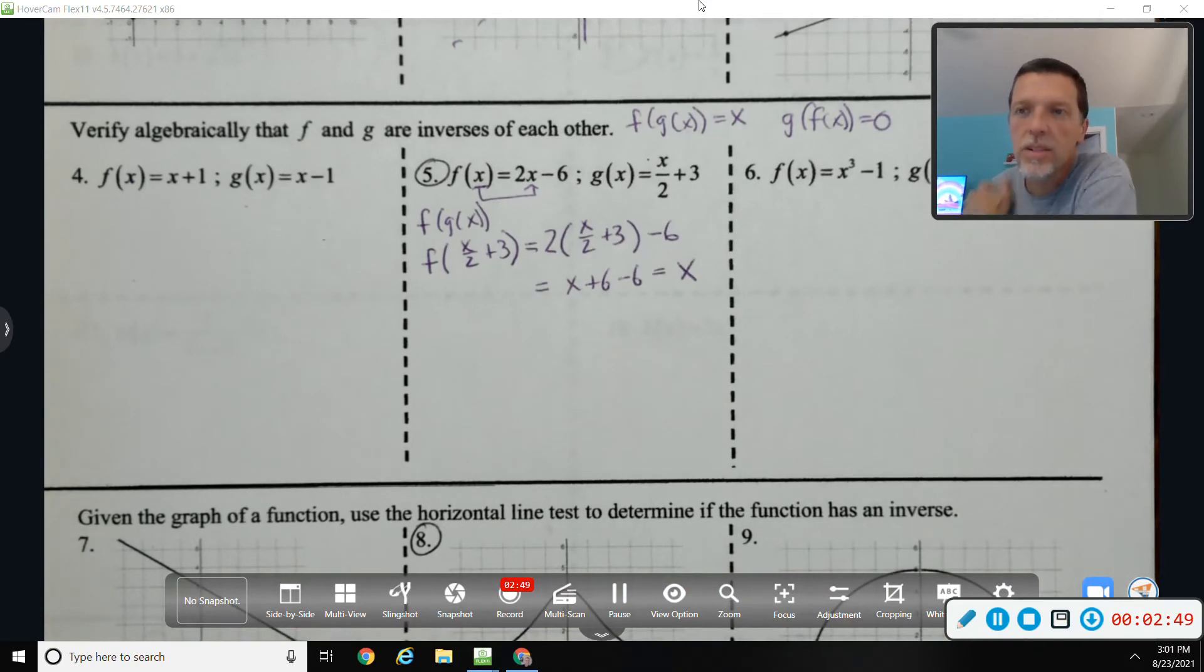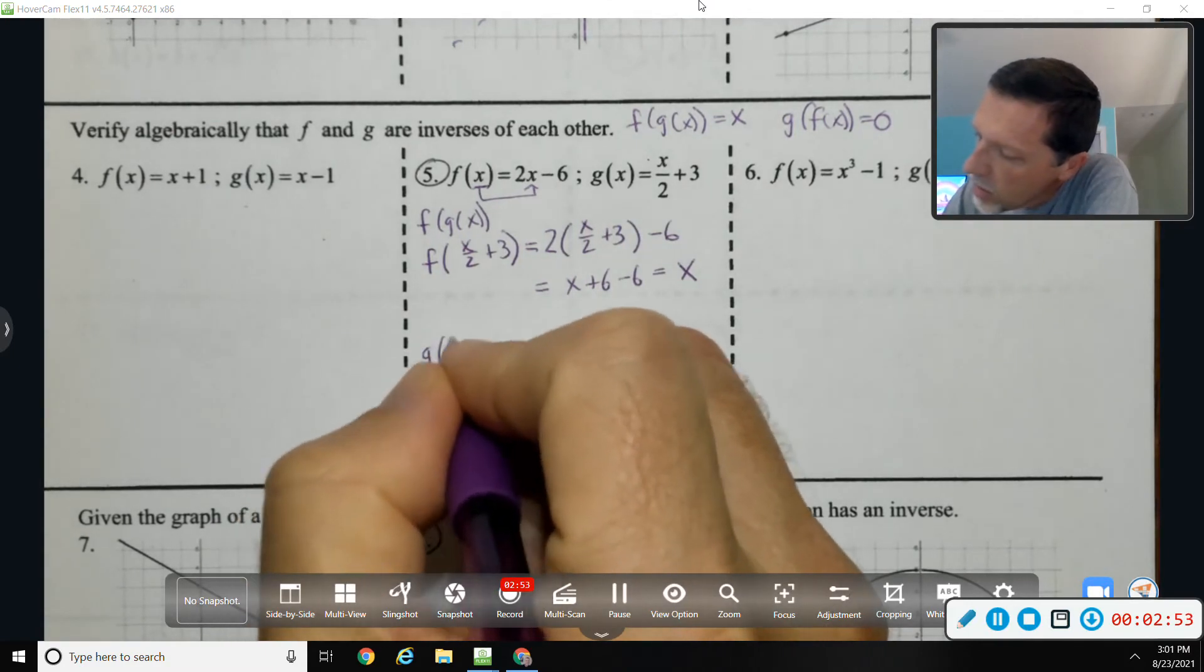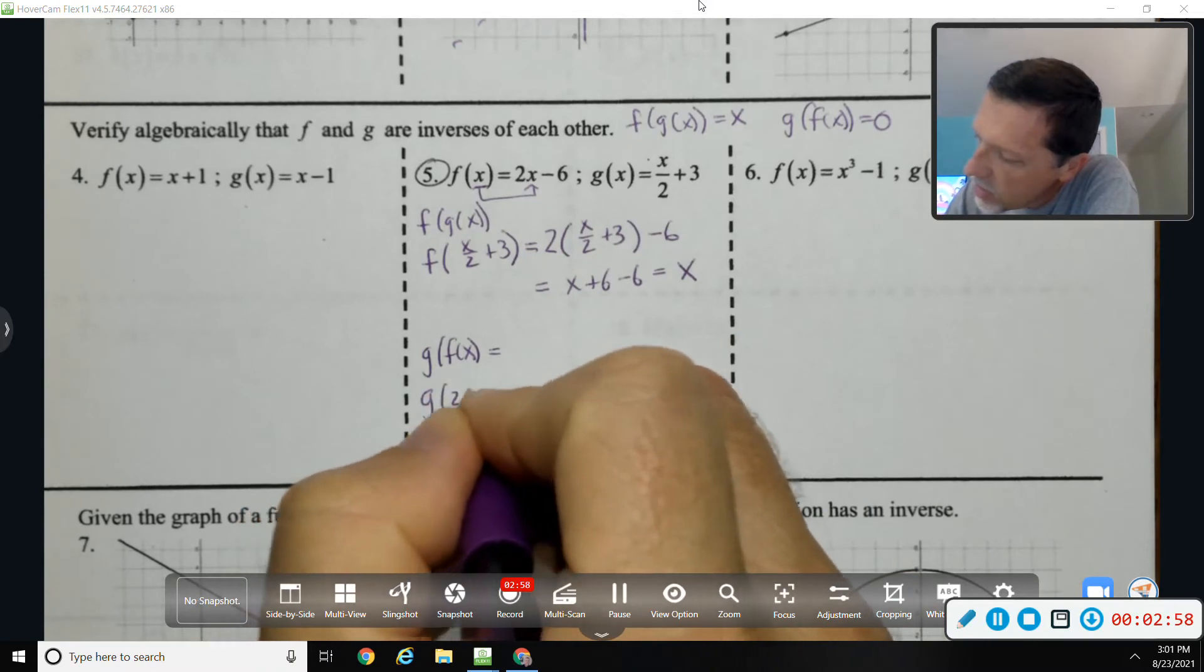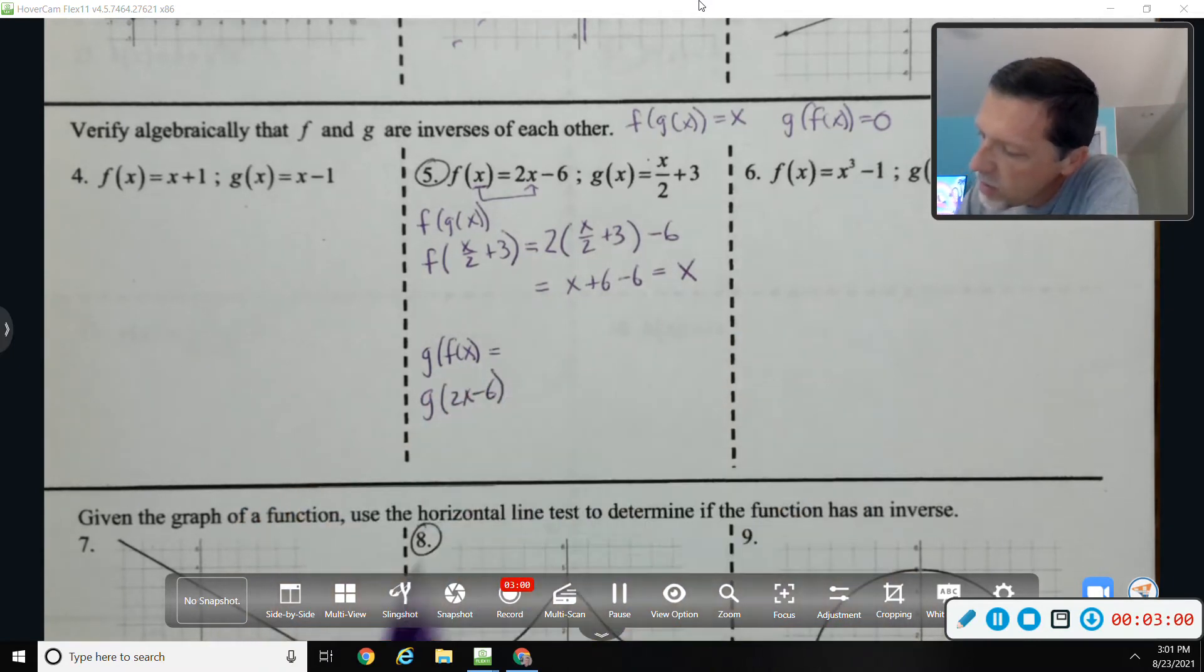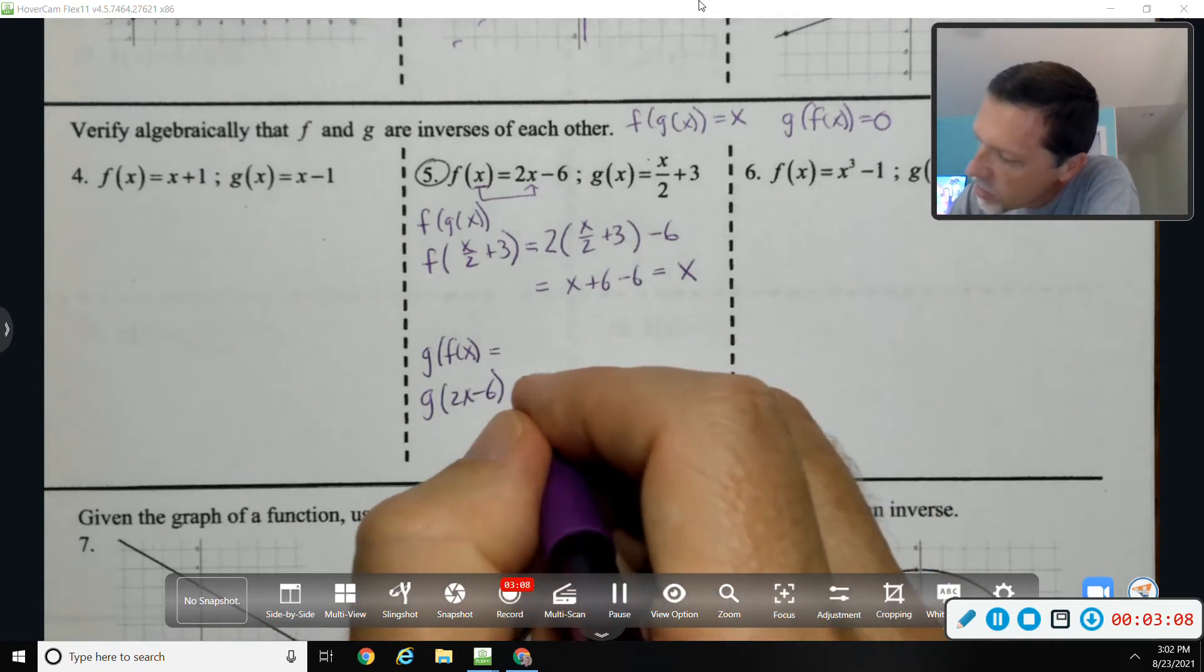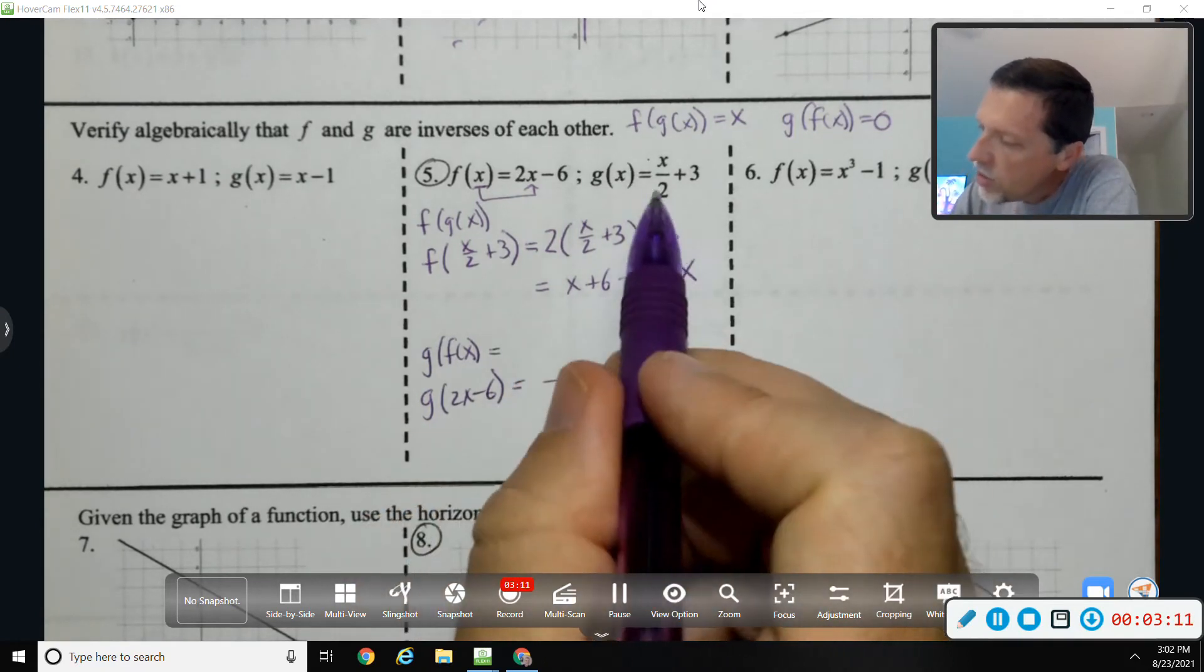So if I distribute the two, I get x plus 6 minus 6, which would just be x. So halfway done—not all the way done, just halfway done. That's f of g of x. G of f of x means g of 2x minus 6, because f of x is 2x minus 6.